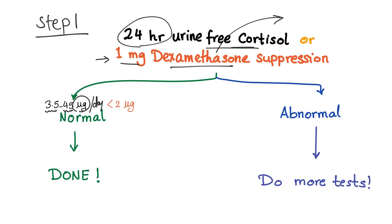When the body has cortisol, or a cortisol-like substance coming from outside, it usually suppresses cortisol production from within. So if you do either the 24-hour urine free cortisol — normal is 3.5 to 45 micrograms per day — or the one-milligram dexamethasone suppression test, and the cortisol in the blood is less than two micrograms, that is normal. We are done — this patient does not have Cushing's.